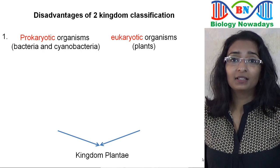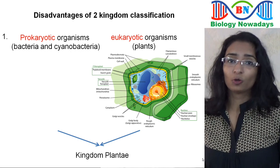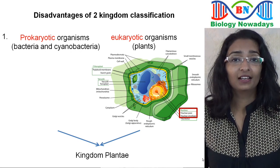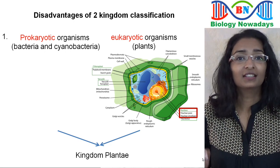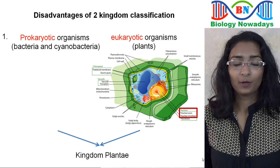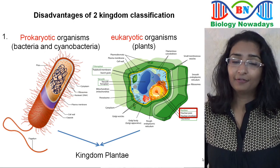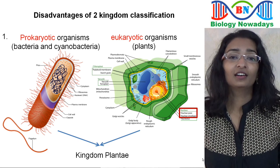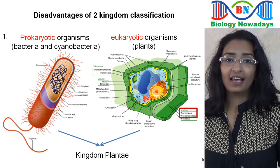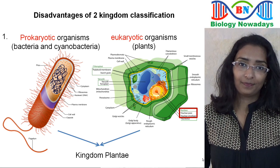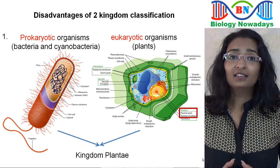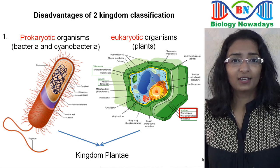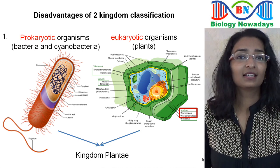In eukaryotic cells, as seen in the plant cell shown here, a true nucleus surrounded by a nuclear envelope or membrane is present. While in a prokaryotic cell, as seen in the bacterial cell shown here, a true nucleus and nuclear membrane are absent. Still, they were grouped together in kingdom Plantae because the cells of all these organisms have a cell wall.